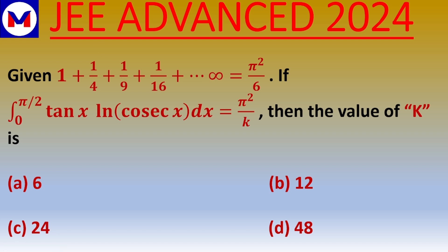Good morning and welcome to the practice session of JEE Advanced 2024. We have given a series: 1 + 1/4 + 1/9 + 1/16 + ... up to infinite equals π²/6. If the integration from 0 to π/2 of tan(x) · log(cos x) dx equals π²/k, then the value of k is: (a) 6, (b) 12, (c) 24, or (d) 48.